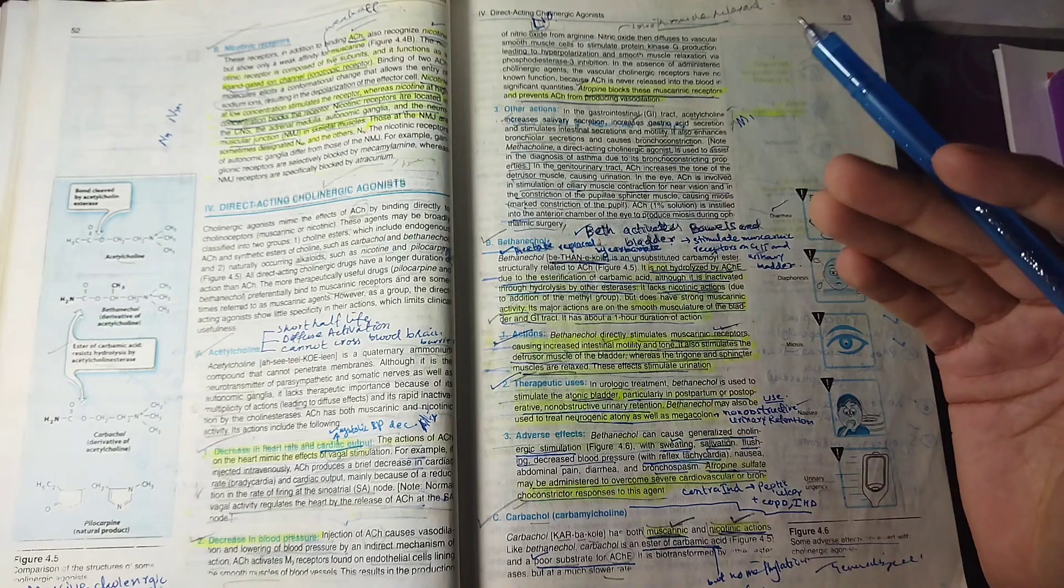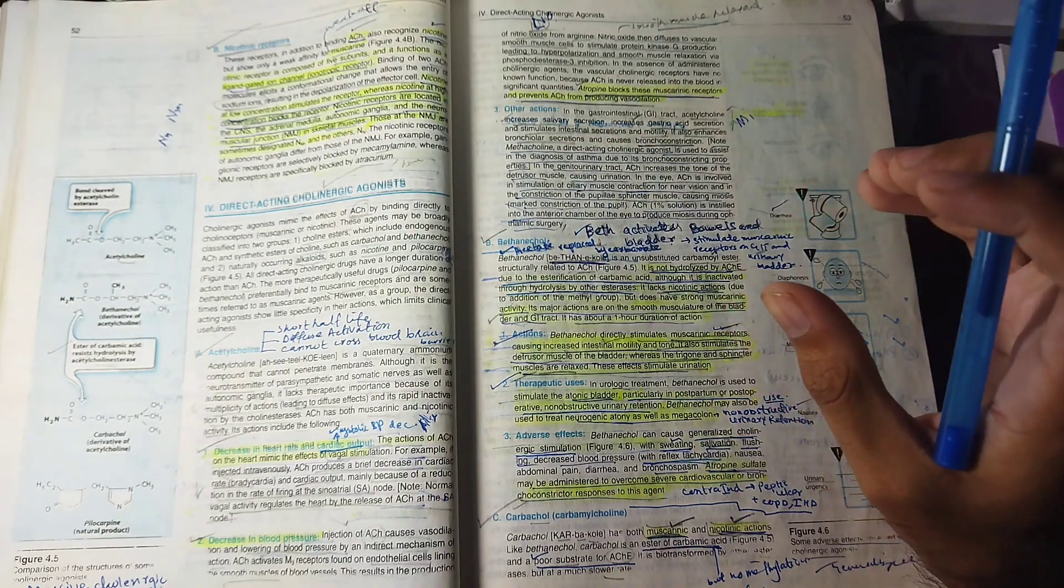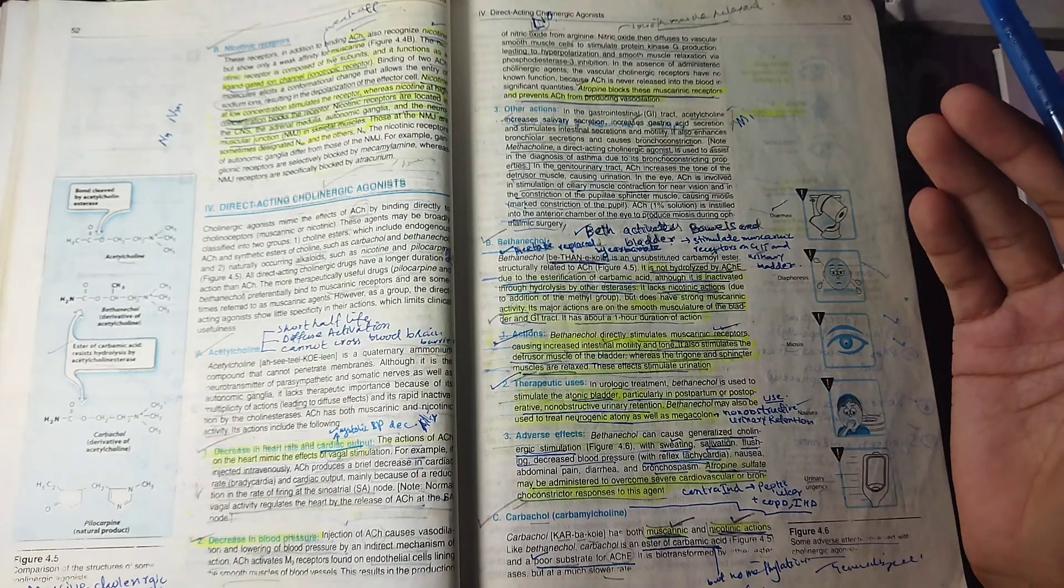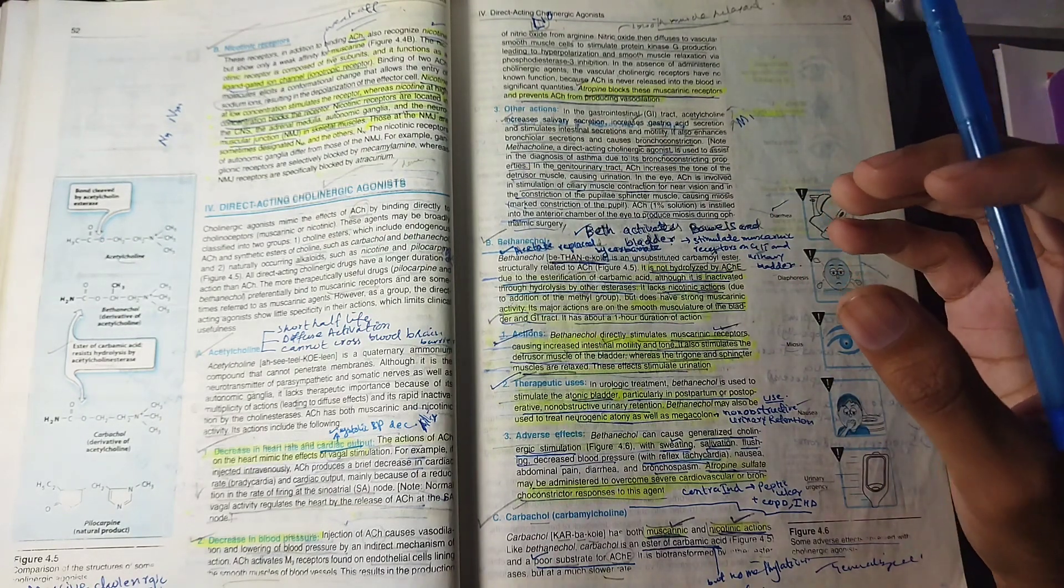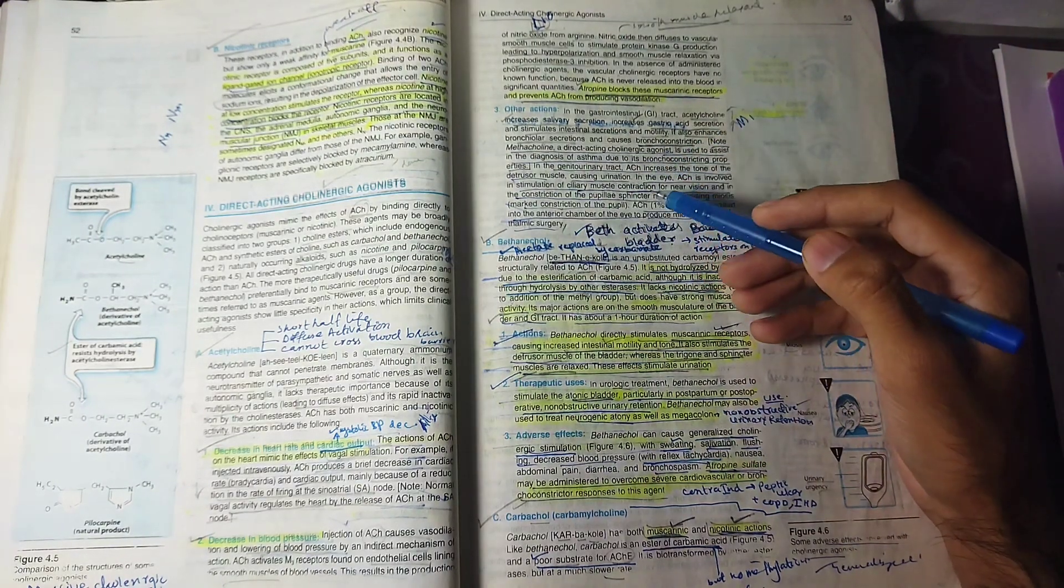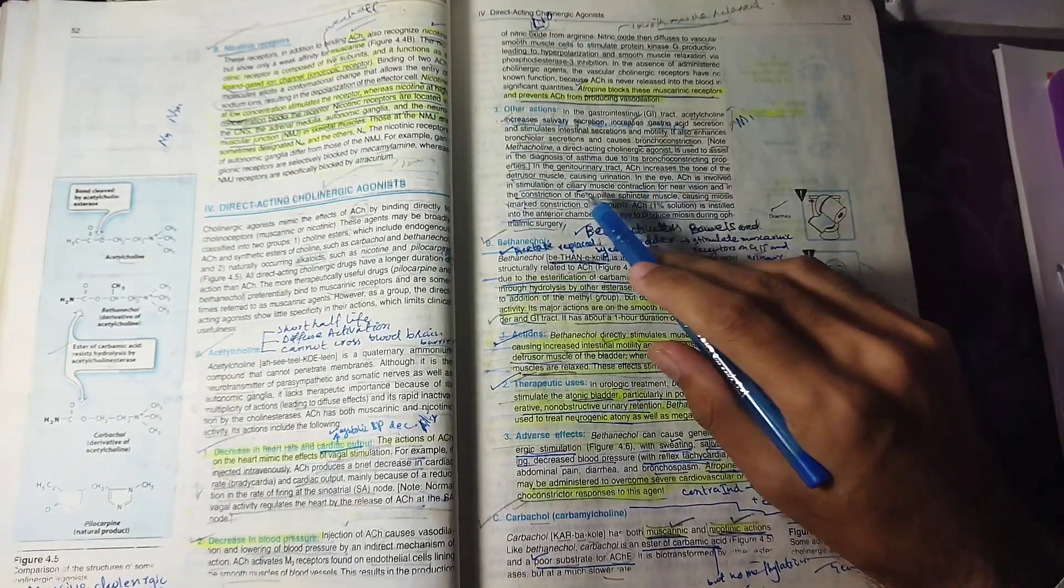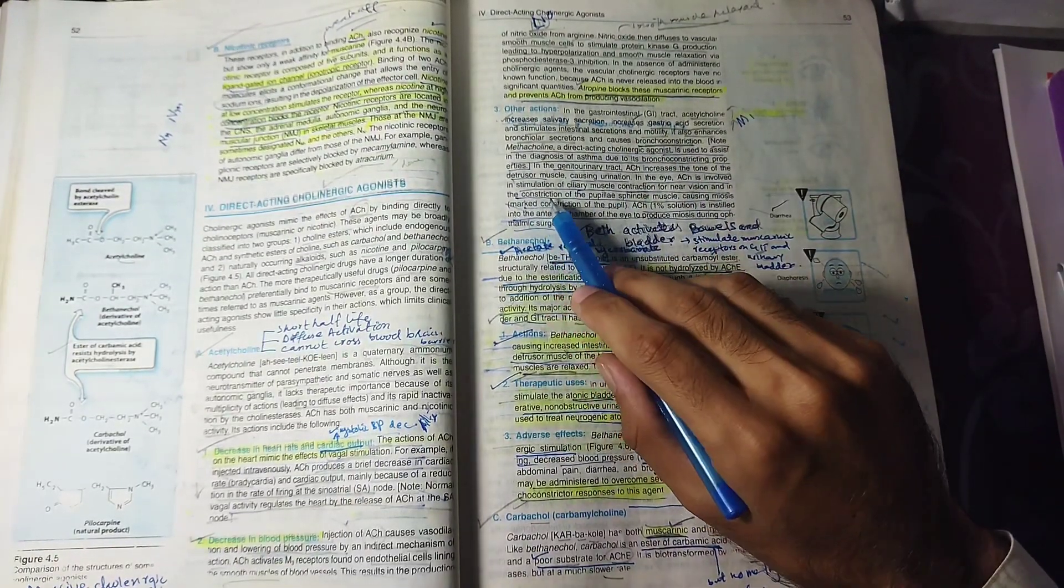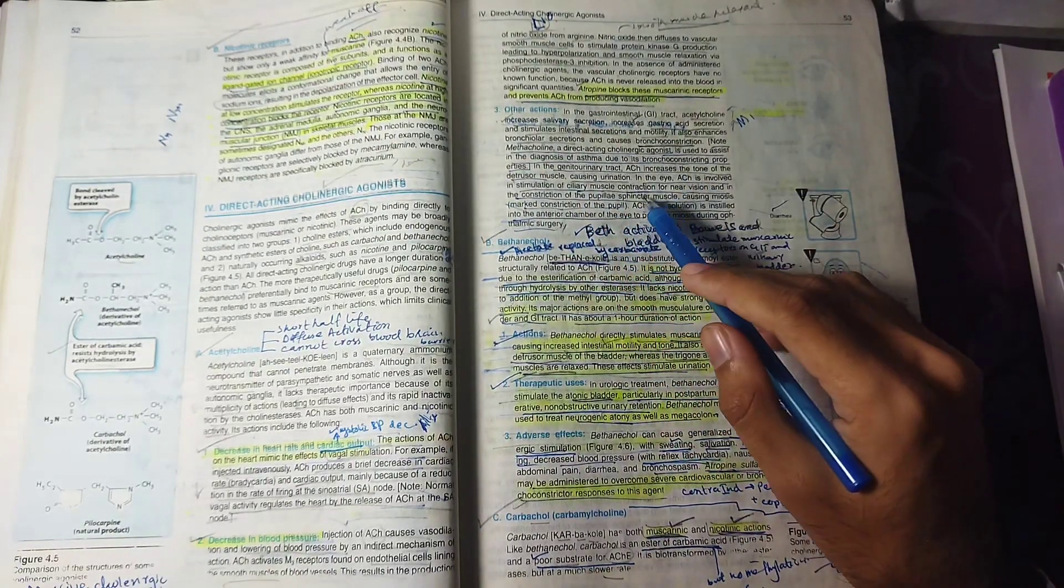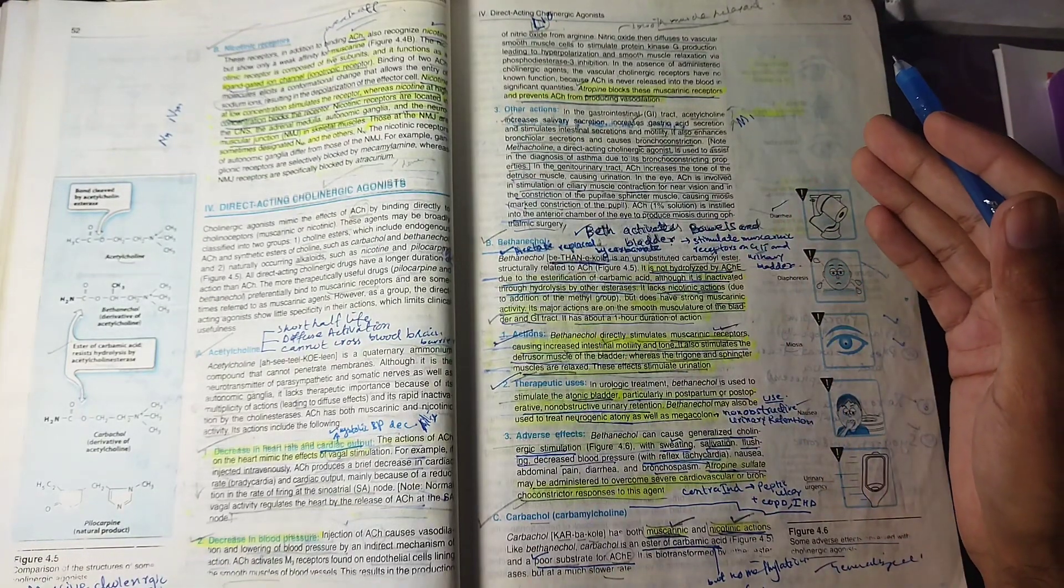Remember that parasympathetic is called rest and digest. In resting you don't need to see far, you have to work nearby. In emergency situations you need sympathetic, but for near vision you need parasympathetic. This causes pupil constriction and miosis, and the eye accommodates for near vision.